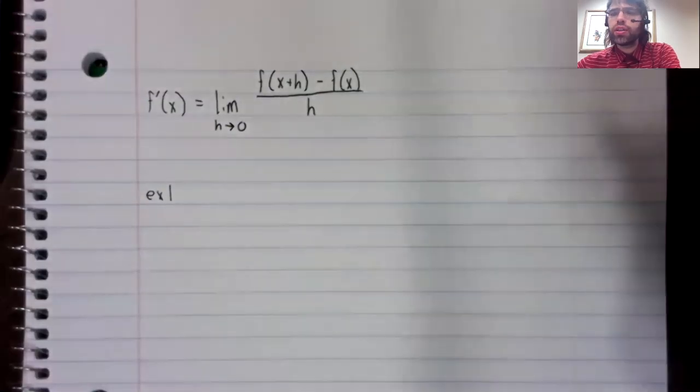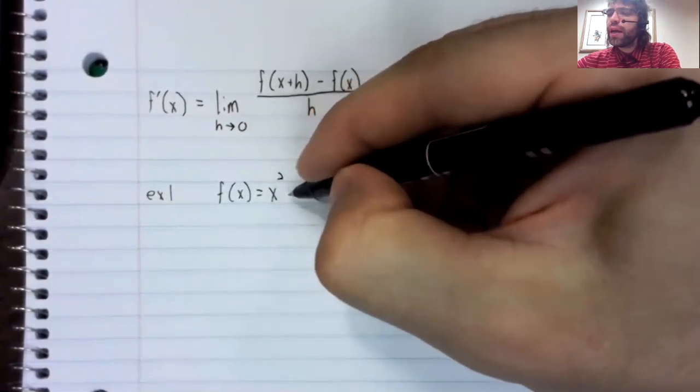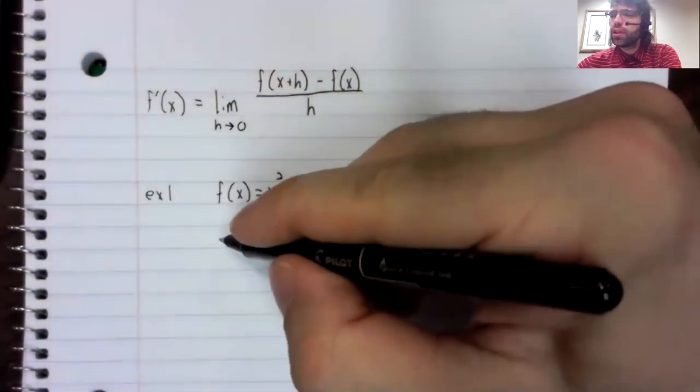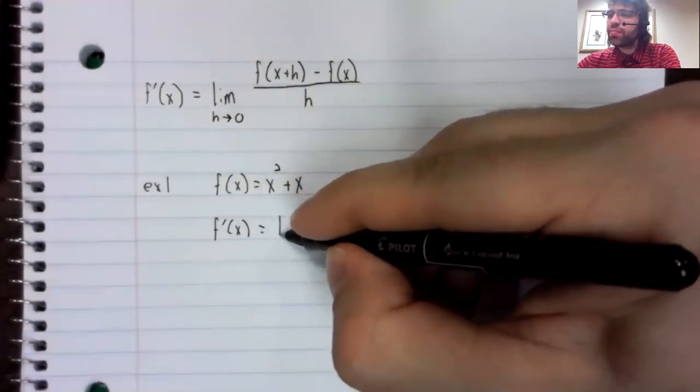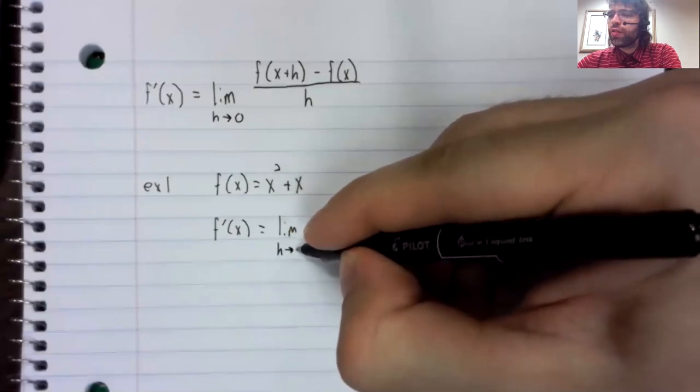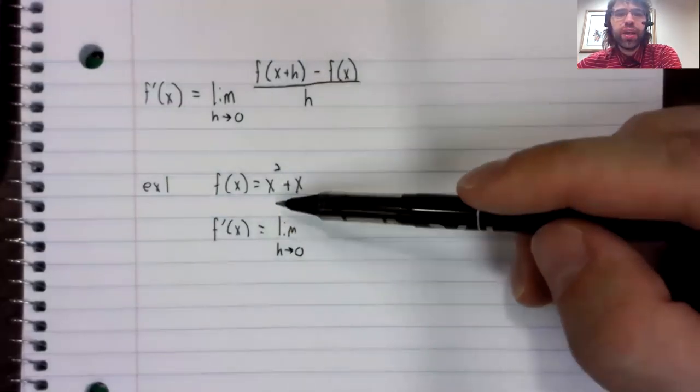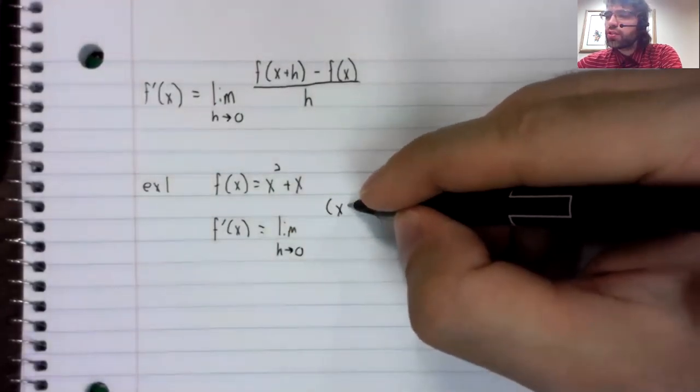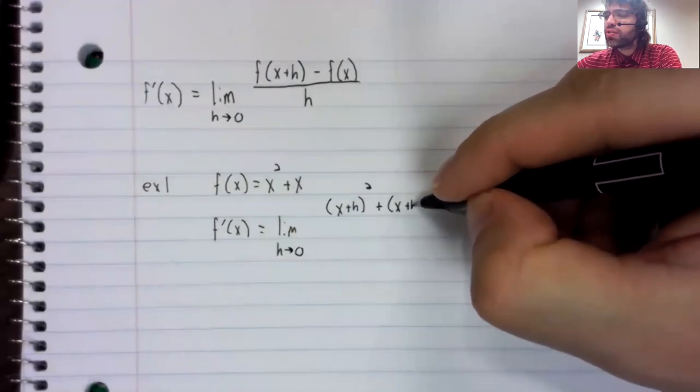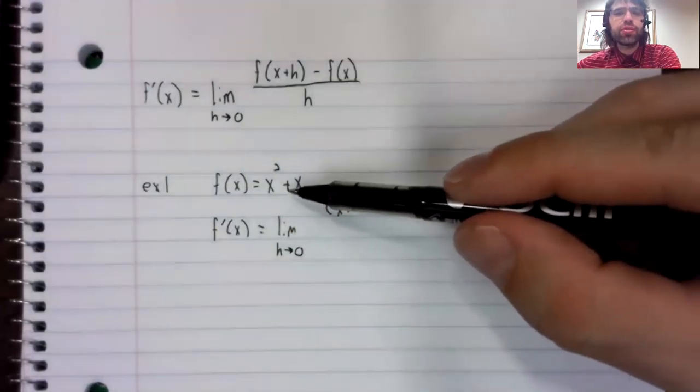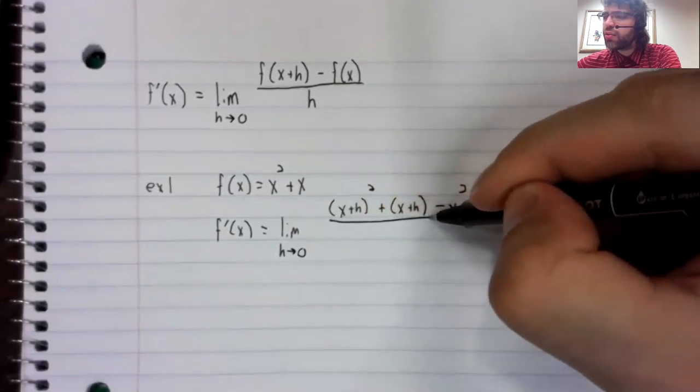Example one. Let f of x be x squared plus x. And our goal will be to find f prime of x. So the first step is always going to be the same. It's to just plug and play with this definition. f of x plus h is x plus h squared plus x plus h minus f of x. So minus this, divided by h.